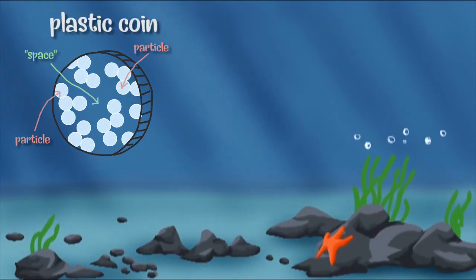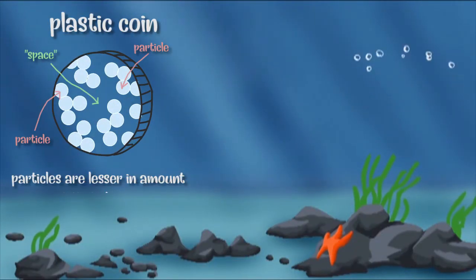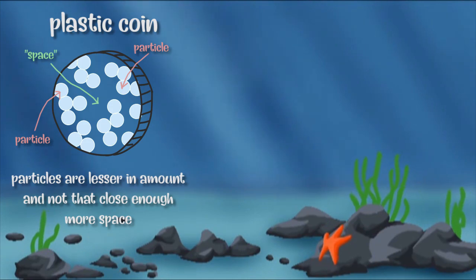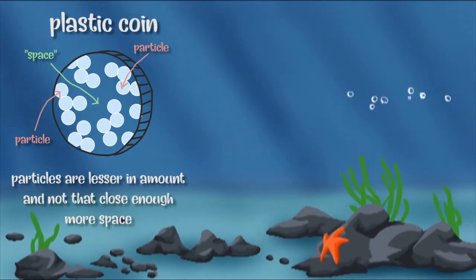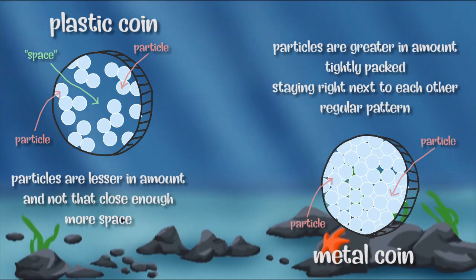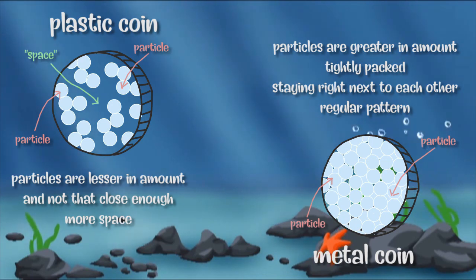Particles in plastic materials are lesser in amount and are not that close together, giving much space for them to move about and slide past each other. Particles in solid materials, like the metal coin, are greater in amount and tightly packed.